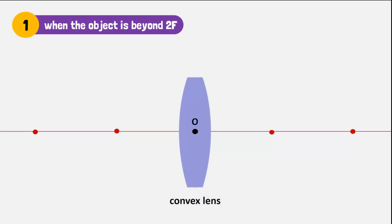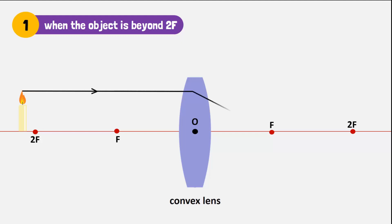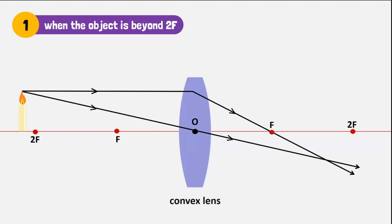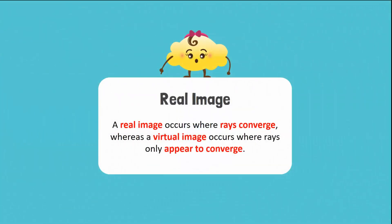Let's use a candle as an object and change its distance from the lens to see how these rules work. Remember, O is the optical center, F is the focal point, and 2F is twice the focal length. Let's place the candle beyond 2F behind the lens. Draw a ray from the top of the candle refracting through the lens and passing through the focal point. The second ray will go through the optical center without refracting. As a result, a real, inverted, and smaller image will form where these rays meet. A real image occurs where rays converge, whereas a virtual image occurs where rays only appear to converge.